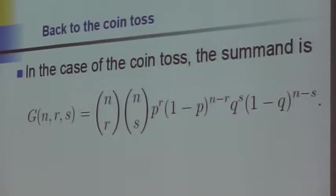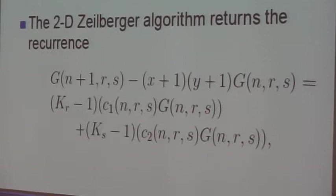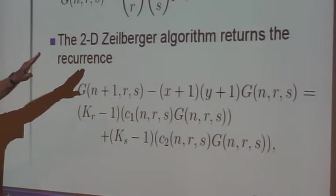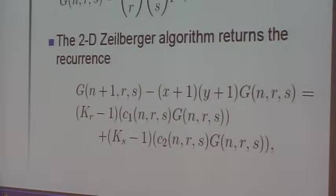It returns the following recurrence for the summand. I must emphasize the sum sign is missing up here—just the summand. So you find that g(n+1,r,s) minus (x+1)(y+1)g(n,r,s)—and I'll say what x and y are in a moment.